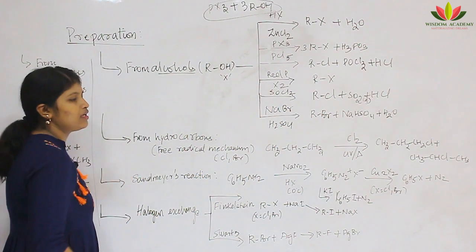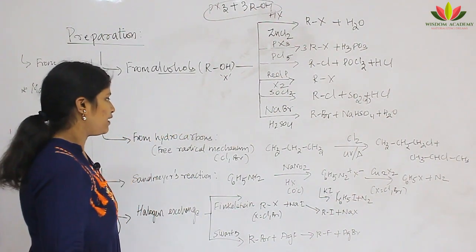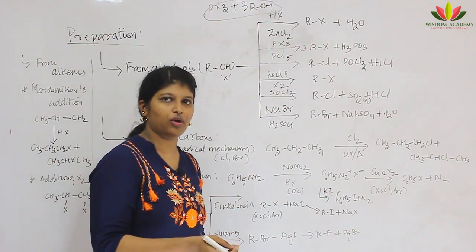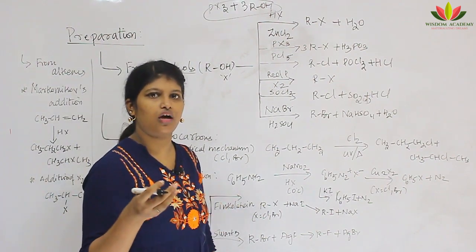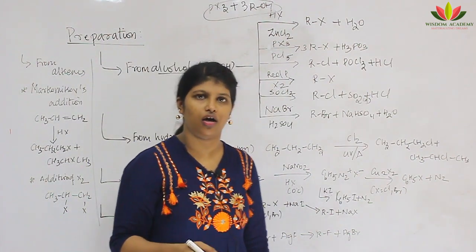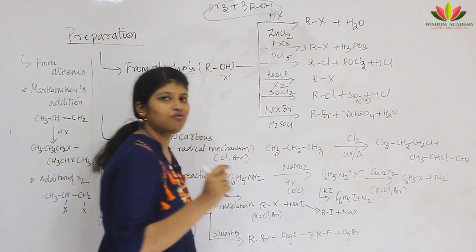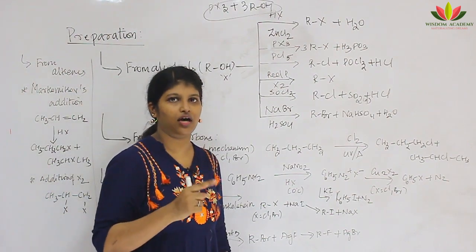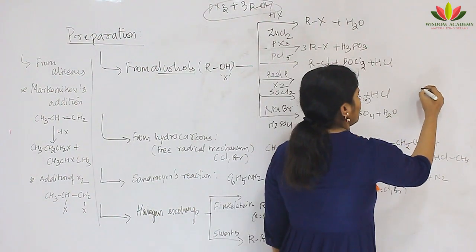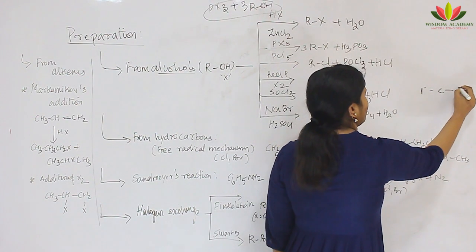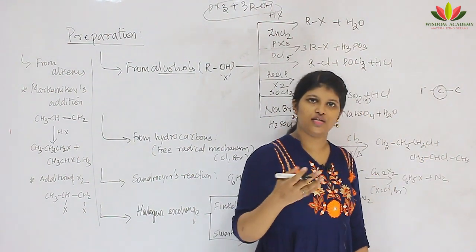The next method is from hydrocarbons, which follows a free radical mechanism. A free radical mechanism means the reaction goes via free radical (not carbocation) intermediates. We have already seen what carbocations, carbanions, and carbenes are. Primary carbon is a carbon attached to only one other carbon or no carbon at all — methyl is a primary carbon attached to no other carbon.